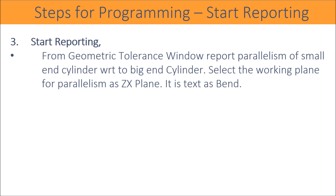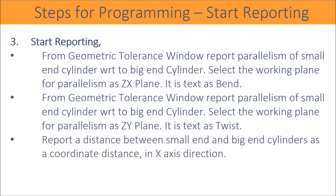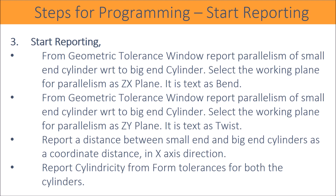Start reporting. From the geometric tolerance window, report parallelism of small end cylinder with respect to big end cylinder; select the working plane as ZX plane — this is reported as bend. Again from the geometric tolerance window, report parallelism of small end cylinder with respect to big end cylinder; select the working plane as ZY plane — this is reported as twist. Report the distance between small end and big end cylinders as the coordinate distance in the X-axis direction. Report cylindricity from form tolerances for both cylinders.